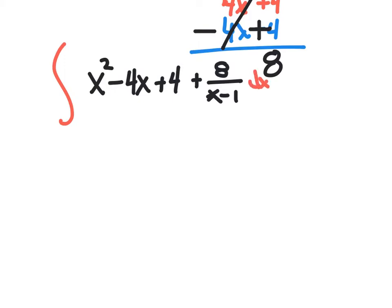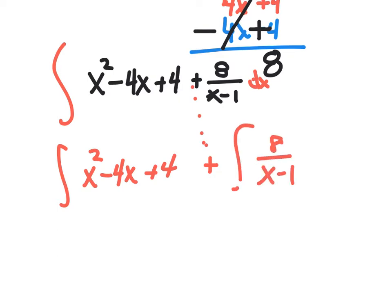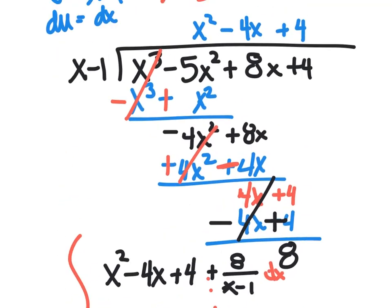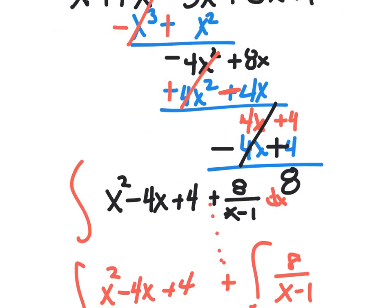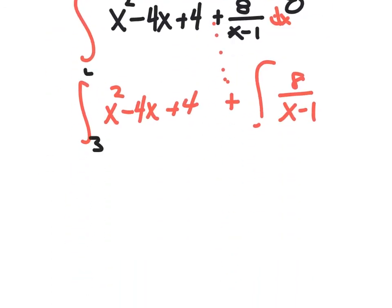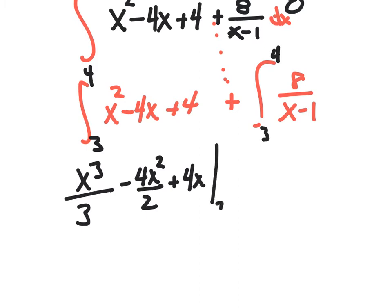Now again, I haven't done any calculus. Now I have to integrate this. So I'll slap a dx on the end. I am going to split. So I'm going to integrate x squared minus 4x plus 4 plus, because that's a plus here, the integral of 8 over x minus 1. Now I don't recall the bounds, so I'm going to have to scroll up. 3 to 4. Okay, so 3 to 4, 3 to 4. So this one side looks pretty straightforward. I'm going to get x cubed over 3 minus 4x squared over 2 plus 4x from 3 to 4.